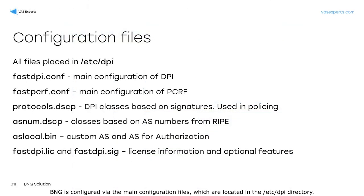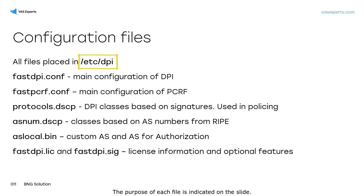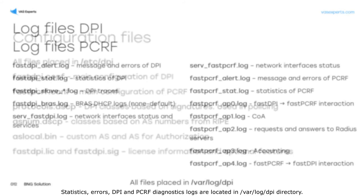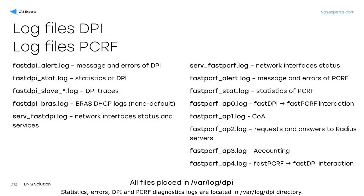BNG is configured via the main configuration files, which are located in the etc/DPI directory. The purpose of each file is indicated on the slide. Statistics, errors, and DPI and PCRF diagnostics logs are located in the var/log/dpi directory.